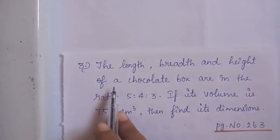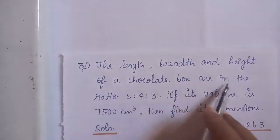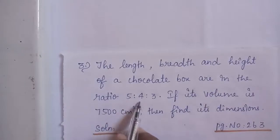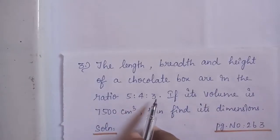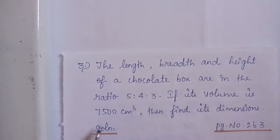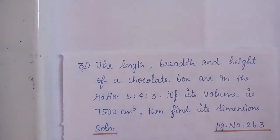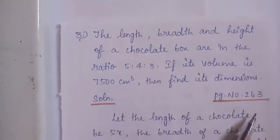Problem number 3: The length, breadth and height of a chocolate box are in the ratio 5:4:3. Here they do not directly give length, breadth and height — it is given in the form of a ratio. If its volume is 7500 cm cube, then find its dimensions. The problem belongs to page number 263.